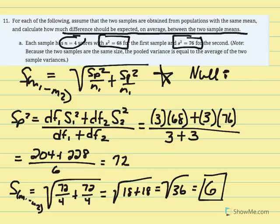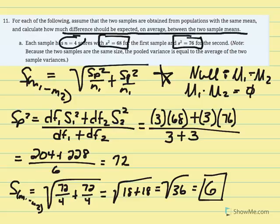The null states mu1 equals mu2, or mu1 minus mu2 equals 0. So if that mean difference is zero according to the null, we anticipate that samples won't always equal the population exactly. The expected difference — or average difference between the two sample means if the null is true — equals 6 points. This gives us a sense that because of sampling error and chance, the difference won't always be 0.